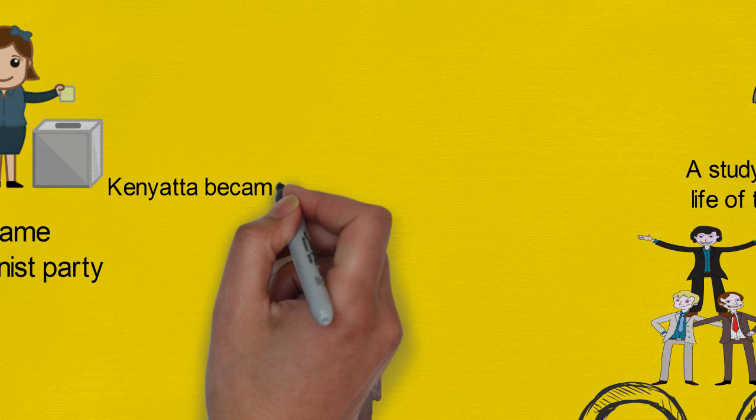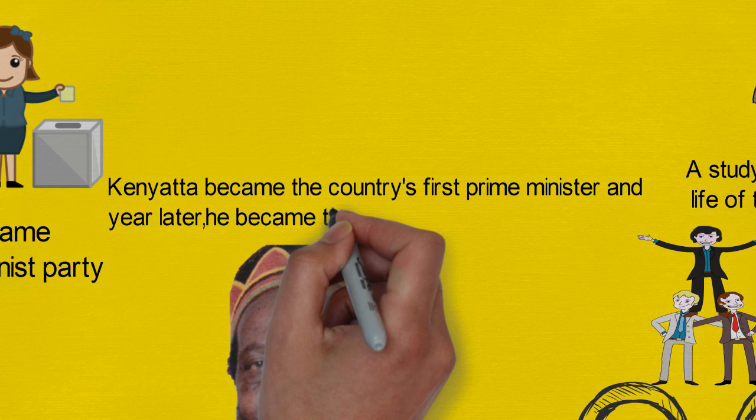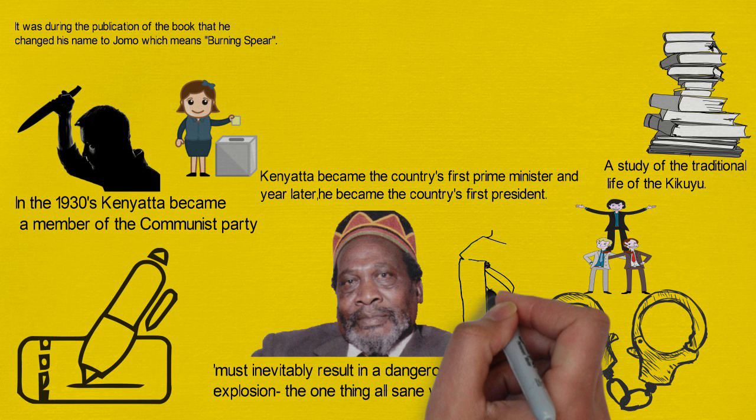A year later, following a constitutional amendment, Kenya became a one-party republic and Kenyatta became the country's first president. He made Kenya's economy stable, even though his regime had some flaws. He died in 1978.